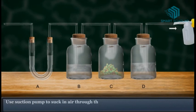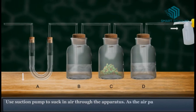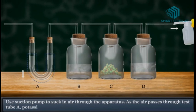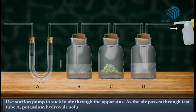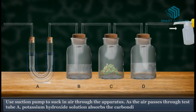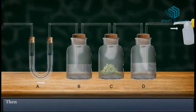Use suction pump to suck in air through the apparatus. As the air passes through test tube A, potassium hydroxide solution absorbs the carbon dioxide from the air.